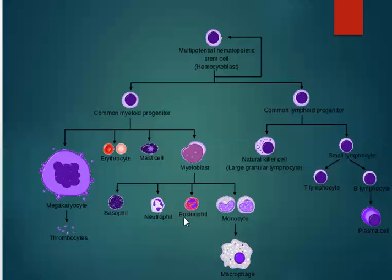Then we have the eosinophils, which have a distinctive red part that gives them away. And then the monocytes, which have a kidney bean shape and give rise to the macrophages. Remember that macrophages come from monocytes, which come from myeloblasts — from the myeloid progenitors — where 'blast' refers to the immature or stem cell.